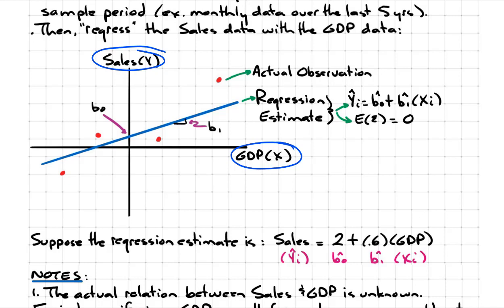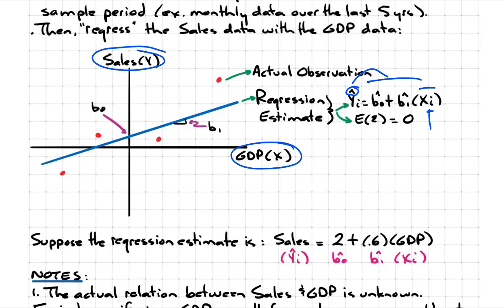We want to come up with a framework or an equation that represents that line. We're going to use this regression to estimate — and that's what the hats mean — to estimate what the value of Y would be when we're forecasting a particular value for X. In other words, if we assume a particular value for GDP, based on this framework, what might be our estimate for sales growth? To do that, we just use the same framework for the equation of a linear line, starting with the intercept term B0.